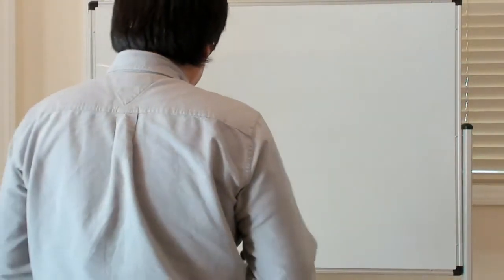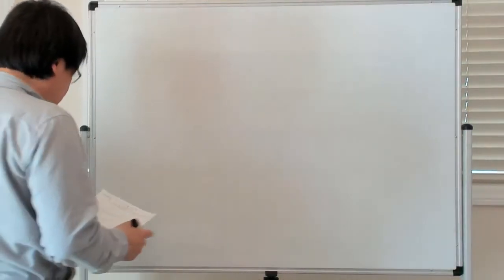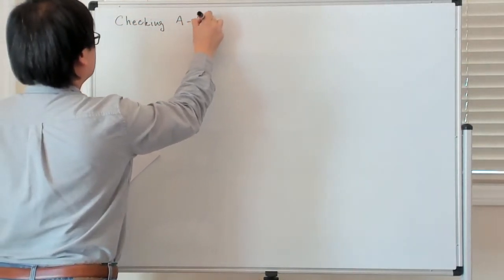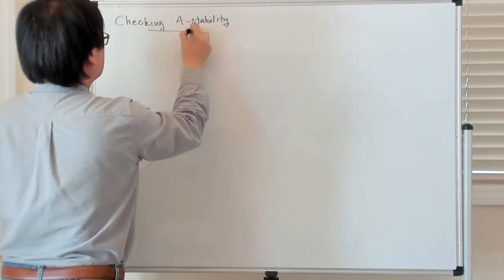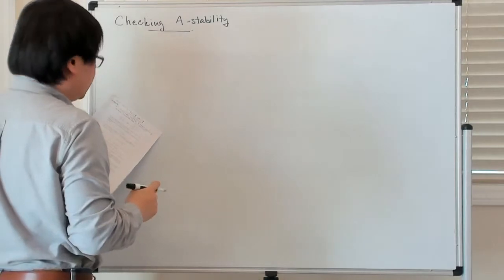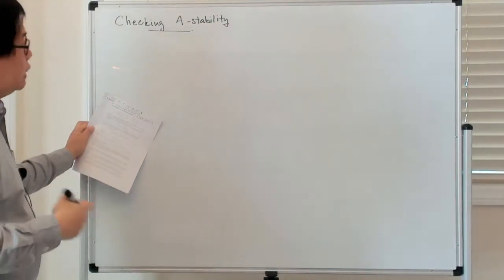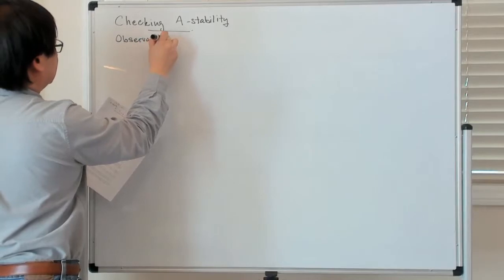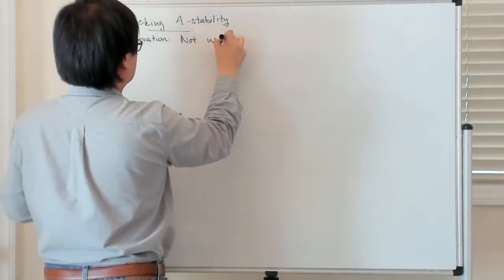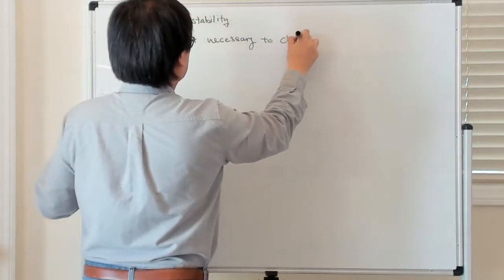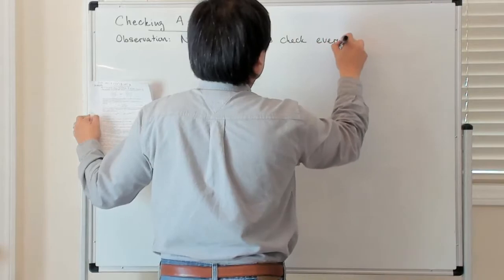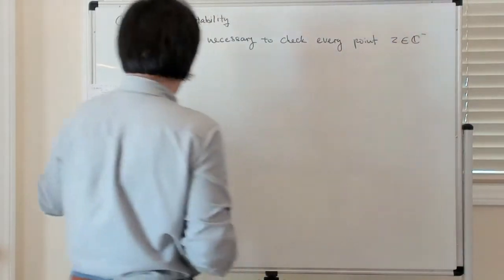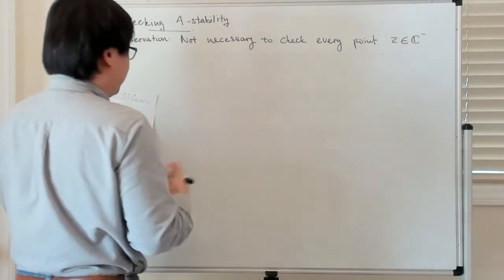All right, so now we're going to see an easier way of checking A-stability. So: checking A-stability. The first observation is that you don't really have to check every single point in the left half plane. The observation is that it's not necessary to check every point Z in the left half plane to verify A-stability.